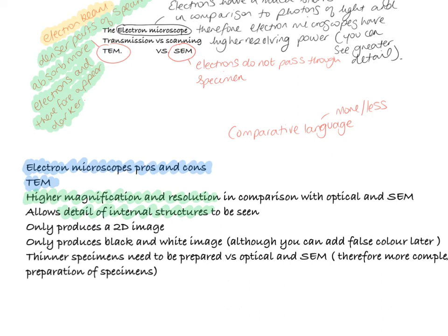However, they only produce two-dimensional images and they only produce black and white images, although you can add false color later and there's some really beautiful examples of transmission electron micrographs. You also need to prepare much thinner specimens compared to optical or scanning electron micrographs and therefore it's a much more complex procedure for preparation of specimens. You also need more specialized machinery, so you need to use a machine called a microtome that you would find in a laboratory in order to cut these very thin specimens.